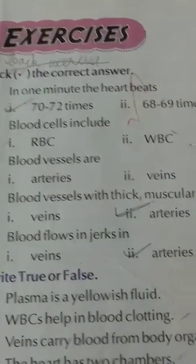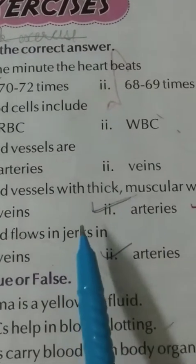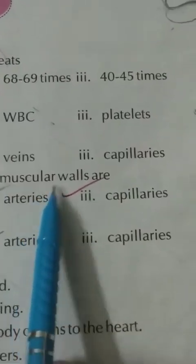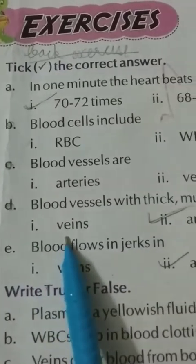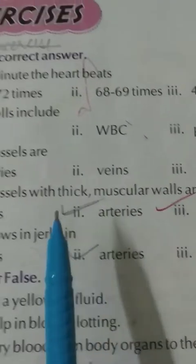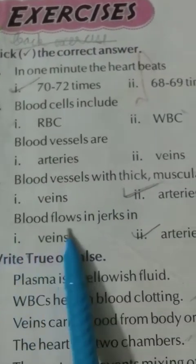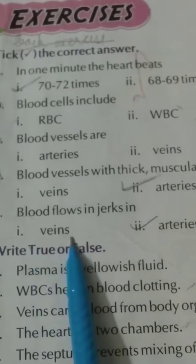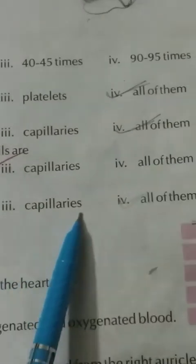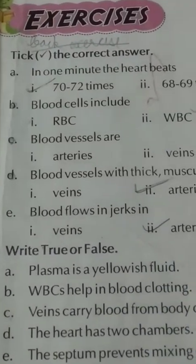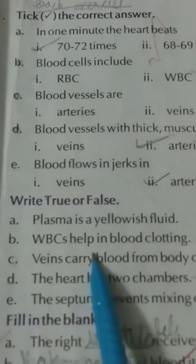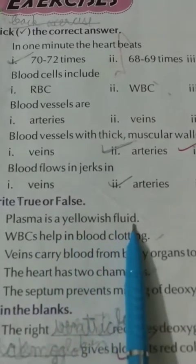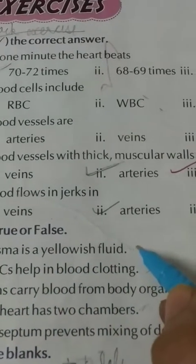Blood vessels with thick muscular walls — the correct answer is arteries. Blood flows in rushes in — the correct answer is arteries. True or false: Plasma is a yellowish fluid — this is true.